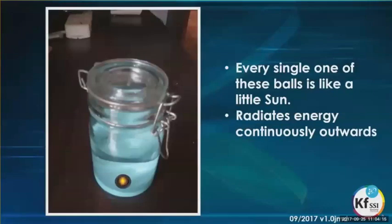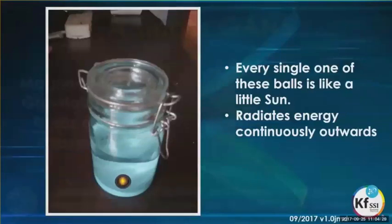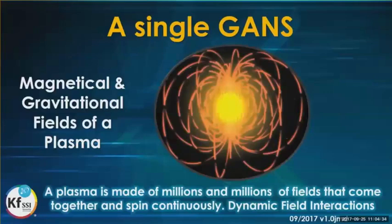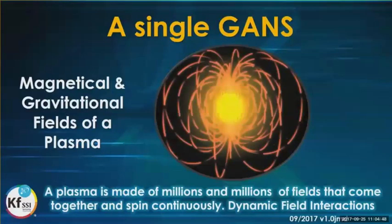If you view every single one of these little balls as a little sun, it's radiating energy continuously outward and receiving energy coming in. View these little GANSes as tiny round three-dimensional magnets — that's essentially what each one of those little GANS plasmas that we make are. Single GANSes have magnetical and gravitational fields, with fields flowing out and coming back in, made of millions of fields that spin continuously, creating a dynamic field interaction.